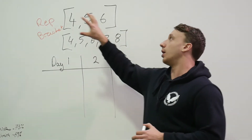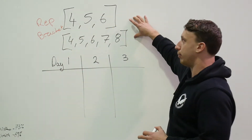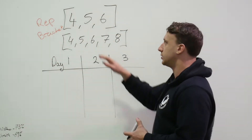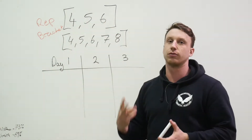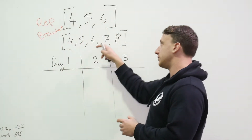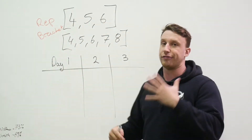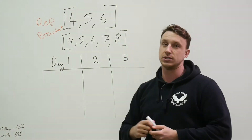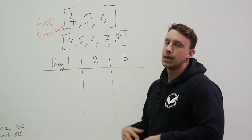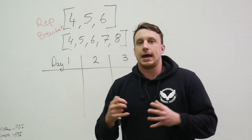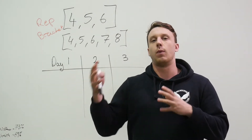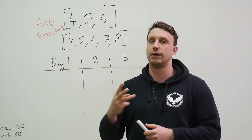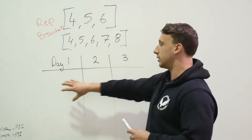As you can see at the top, we have two different rep brackets representing how many reps per session. We have a 4-5-6 bracket — a three-rep bracket — and a 4-5-6-7-8 bracket — a five-rep bracket. We recommend that if you're moving from one day a week to two days a week frequency, you choose the three-rep bracket.